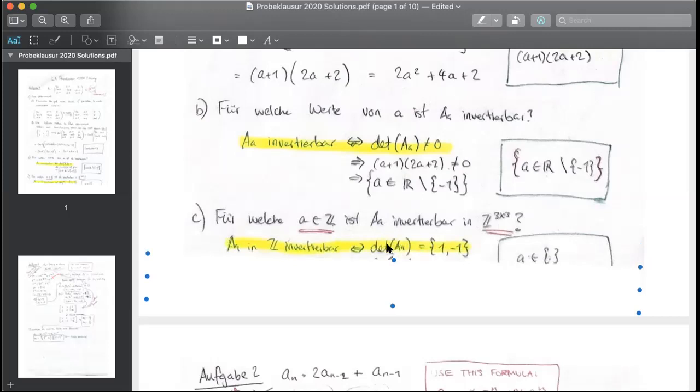And the rule is that A is invertible in the integers, in the field of integers, exactly when its determinant is one or minus one. In the previous case, in the general case, that matrix is invertible when the determinant is not equal to zero. But in the special case of Z three times three, it's invertible when the determinant is one or minus one.